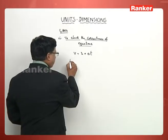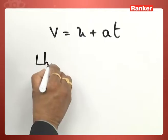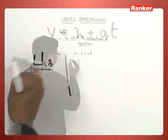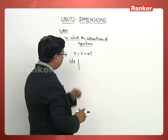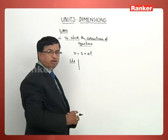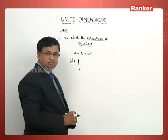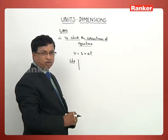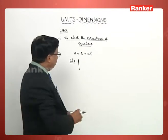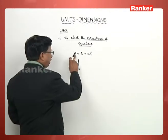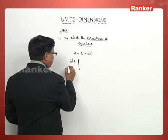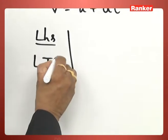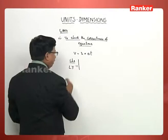Let us consider the quantities on the left-hand side first. There is only one quantity: the final velocity of the body. The dimensional formula of this quantity is L T⁻¹.